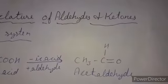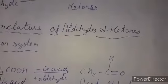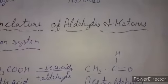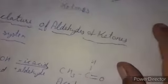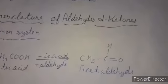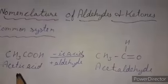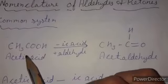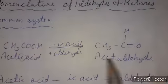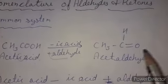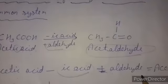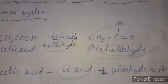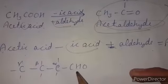Next we discuss the nomenclature of aldehydes and ketones. In the common or old system, they are named according to the corresponding carboxylic acid from which they are obtained by oxidation. We use the suffix '-ic acid'. For example, from acetic acid we remove '-ic acid' and add '-aldehyde', giving acetaldehyde.